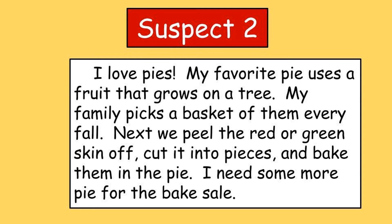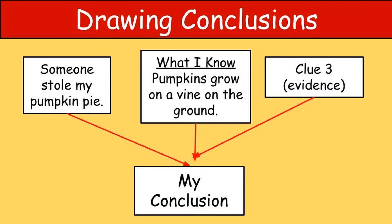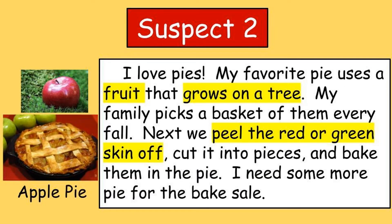Let's look at suspect number two. I love pies. My favorite pie uses a fruit that grows on a tree. My family picks a basket of them every fall. Next, we peel the red or green skin off, cut it into pieces, and bake them in the pie. I need some more pie for the bake sale. Could it be suspect number two? Earlier we mentioned how you not only use what you read when you draw a conclusion, but you also use what you know — that's called your prior knowledge. Here's something I know: pumpkins grow on a vine on the ground, not on trees. So there's no way suspect number two is guilty. Were you able to tell that suspect two likes apple pies? An apple is a fruit that grows on a tree, and the outside is either red or green and you can take the skin off. This suspect is definitely not guilty.